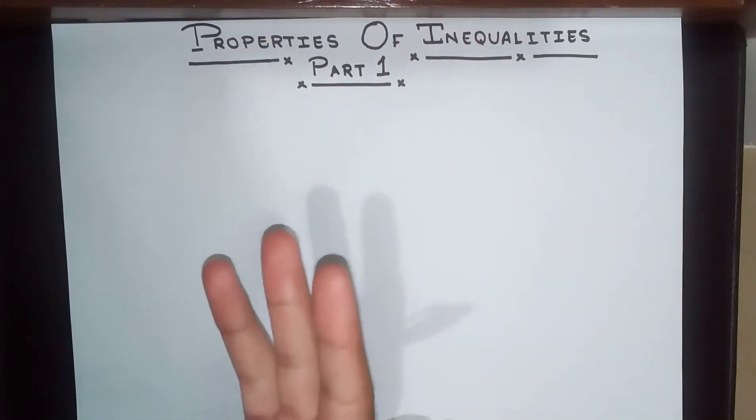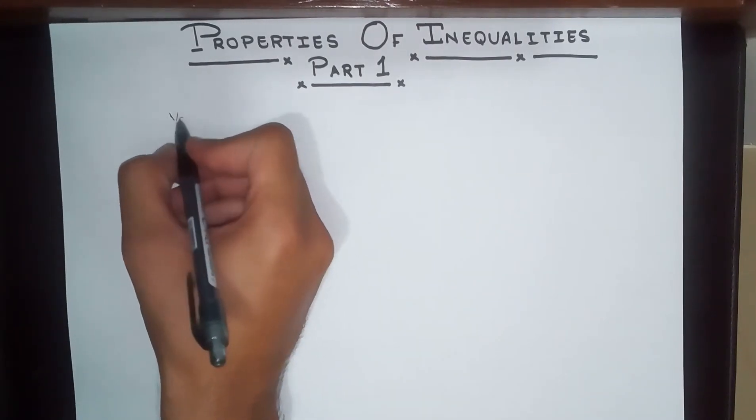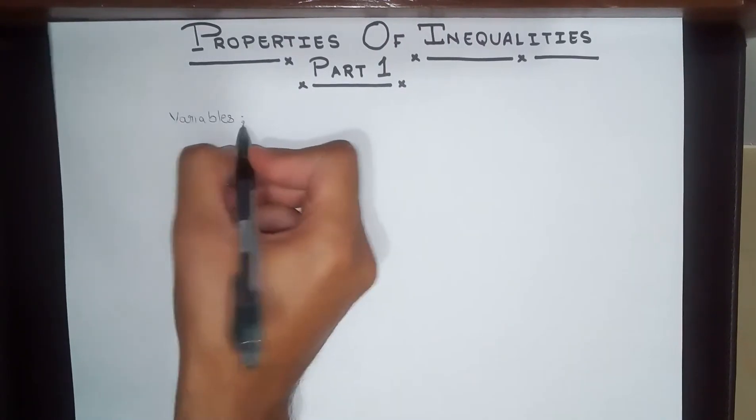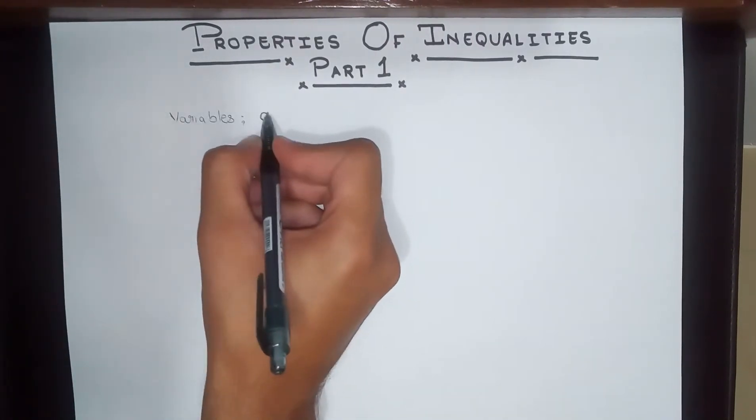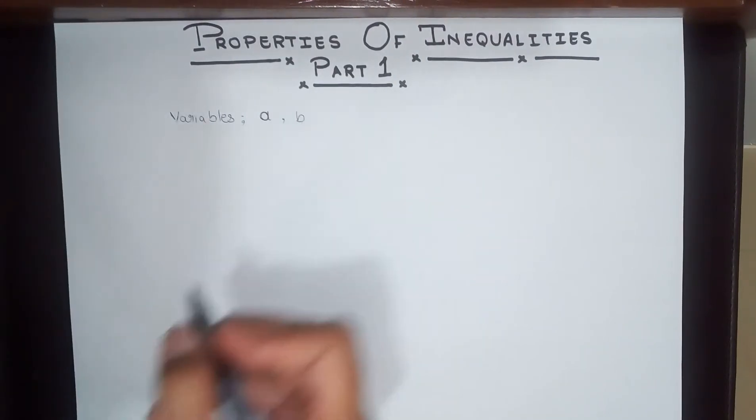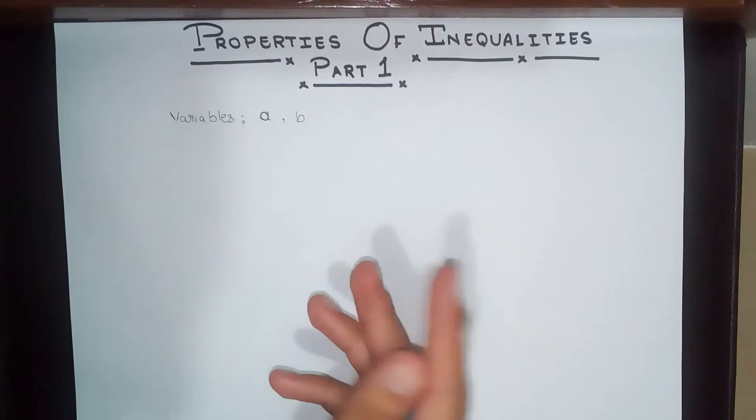So let's start. To help us explain these properties or characteristics, we are going to be taking the help of variables A and B. There will be two variables: variable A and the second one is variable B.